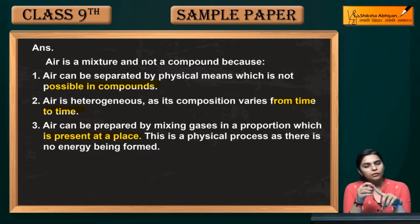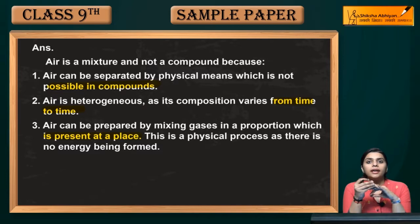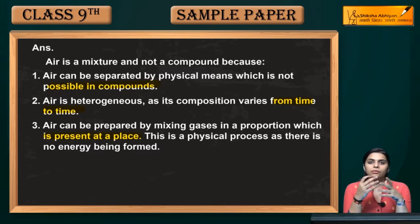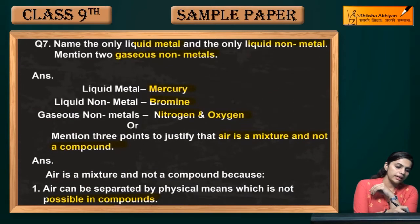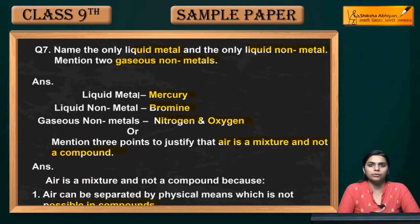So to summarize: first, air is heterogeneous — its composition varies from time to time. Second, air can be separated by physical methods, which is not possible in compounds. Third, air can be made from any place by mixing gases in varying proportions. Therefore air is a mixture, not a compound. Physical methods apply to mixtures; chemical methods apply to compounds.